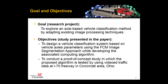Based on this understanding, we were motivated to set up the research goal: to explore an axle-based vehicle classification method by adapting existing image processing techniques. The objectives are twofold. First, to design a vehicle classification system based on vehicle axle parameters using the FCM image segmentation approach, with associated computing operations developed. Second, to conduct a proof-of-concept case study using real-world data. The proposed algorithm is tested using video traffic data specifically at the I-75 freeway in the Cincinnati area, Ohio.